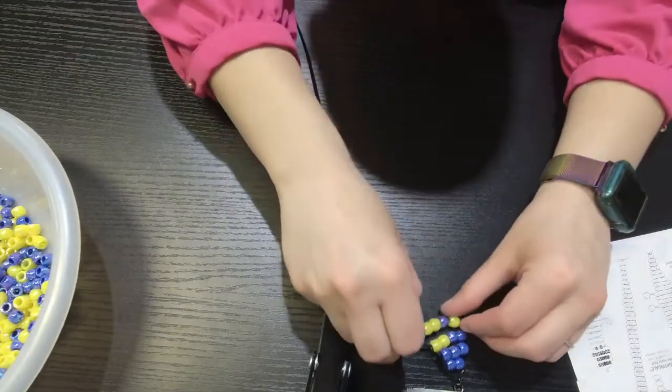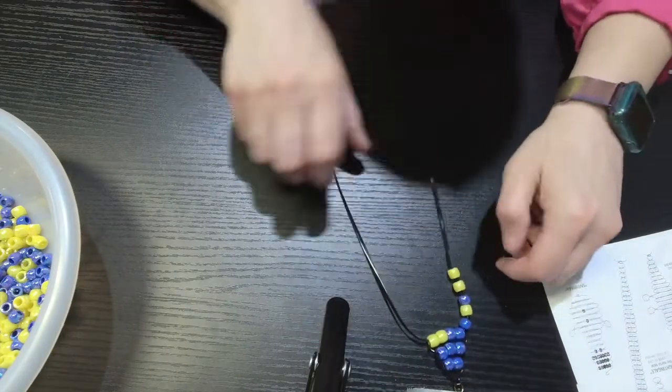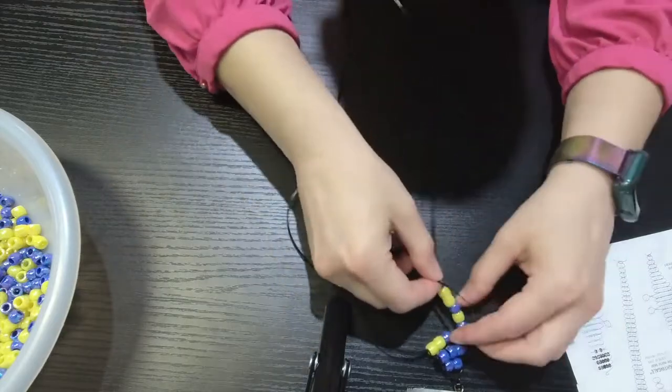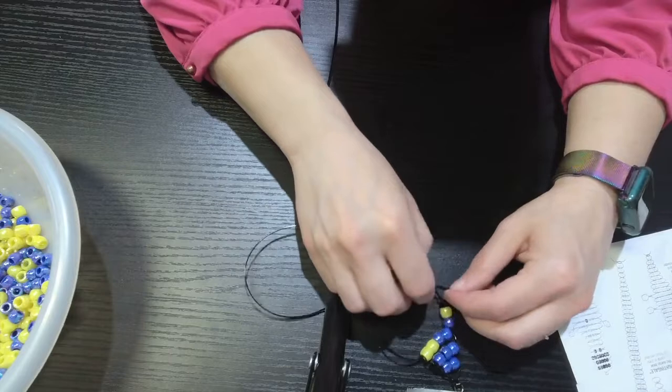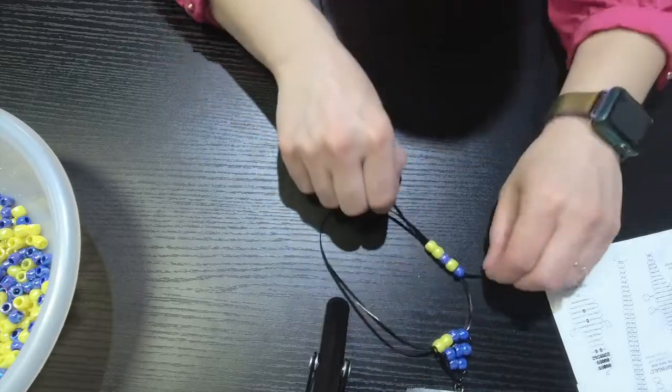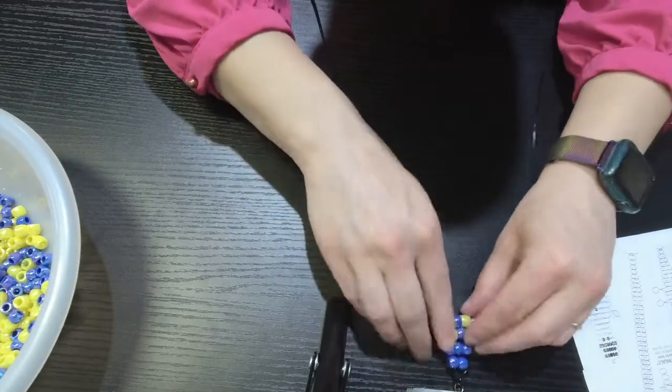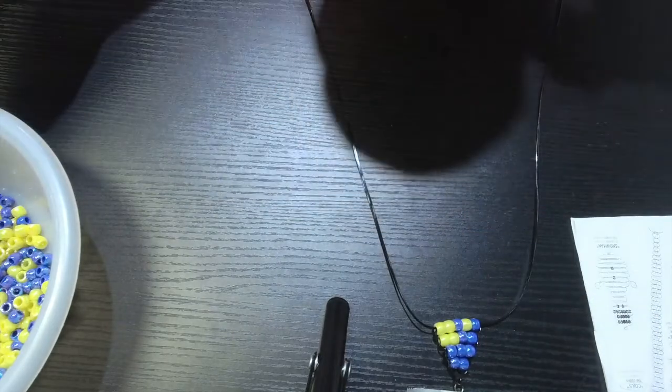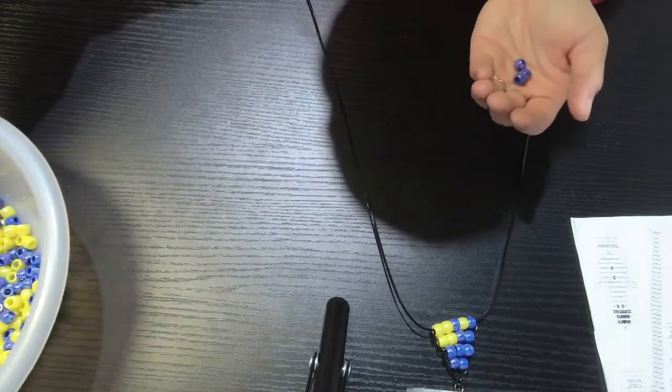So once you have that on there, this is something you can do before you string it through - you can always bend it and make sure that it matches the pattern on the page, because that's where it's going to end up sitting. Once you're happy with that, take the other cord. It gets a little awkward at this early in the project because the cord is so long.